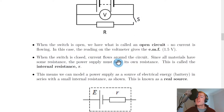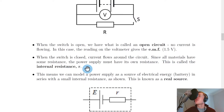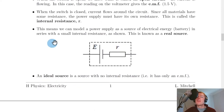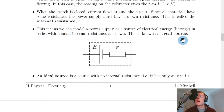When the switch is closed, current will flow around the circuit. Since all materials have some resistance, the power supply must have its own resistance. This is called the internal resistance, given the symbol lowercase r. It's internal because it's internal to the battery. We can model a power supply as a source of electrical energy — a battery — in series with a small internal resistance.